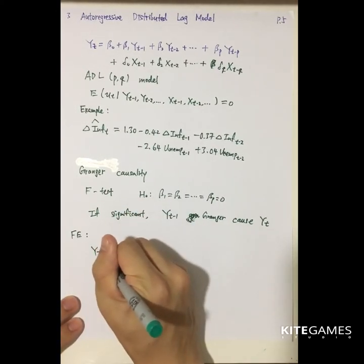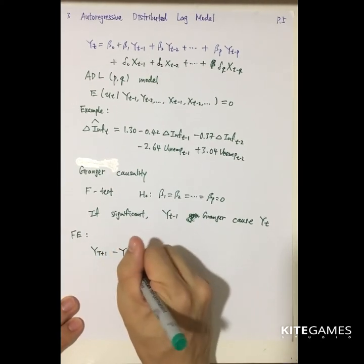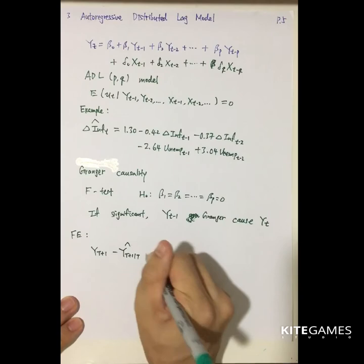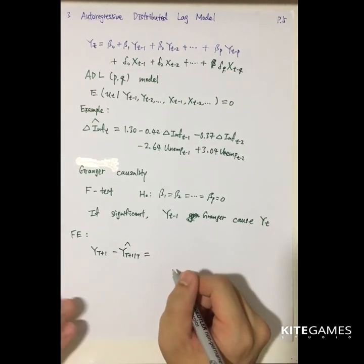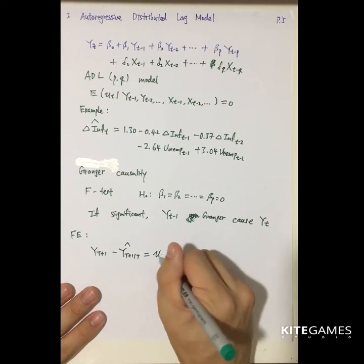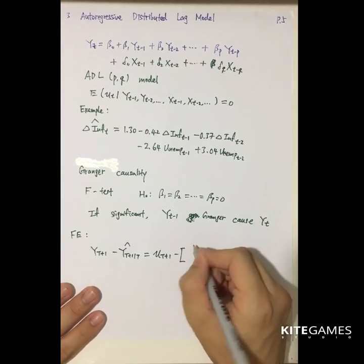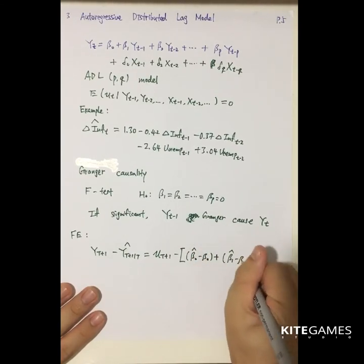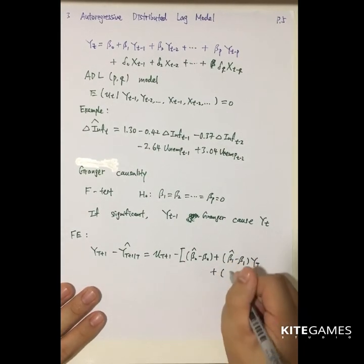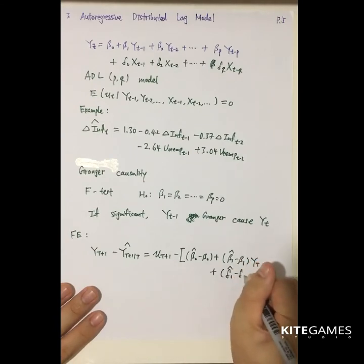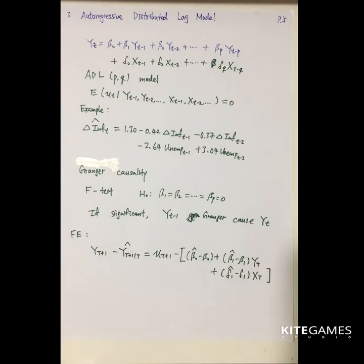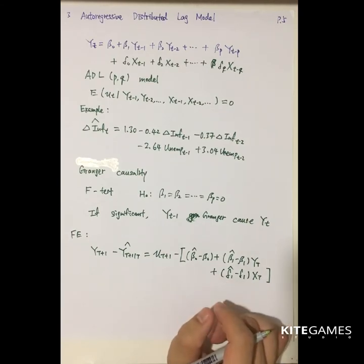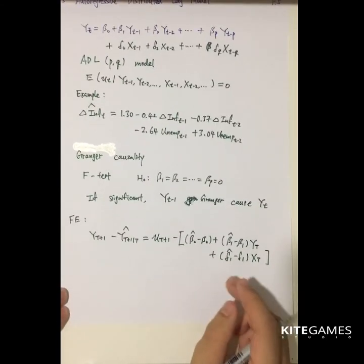The forecast error is given by the actual value of t plus 1 minus the estimated value of t plus 1 given time t. So here the forecast error will be equal to u t plus 1 minus the beta 0 hat minus beta 0 plus beta 1 hat minus beta 1 times yt. Here you still have the another independent variables, so delta 1 hat minus delta 1 xt. So this is the forecast error.